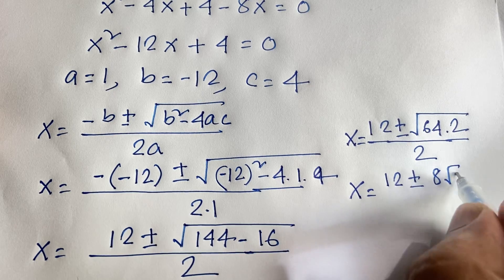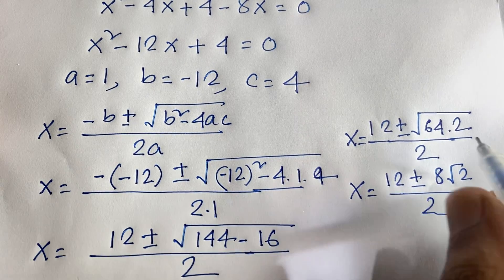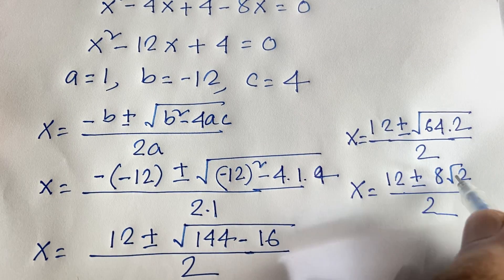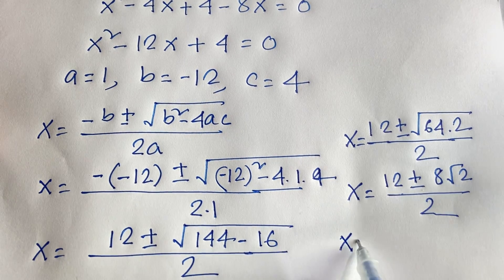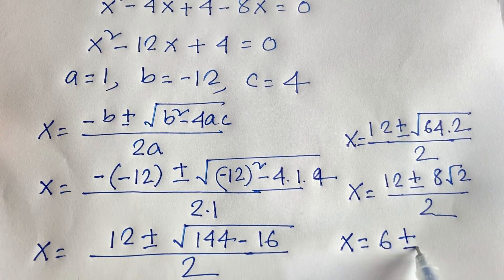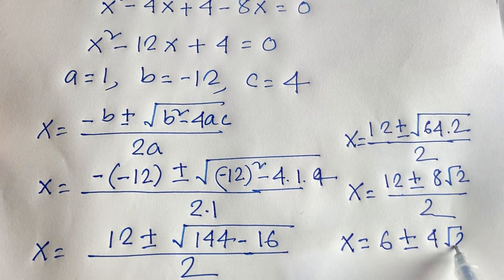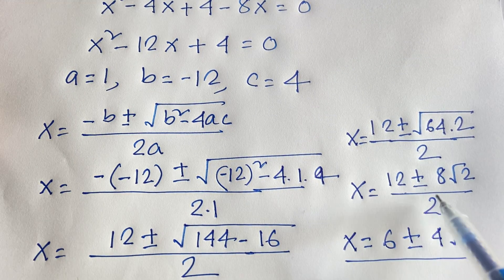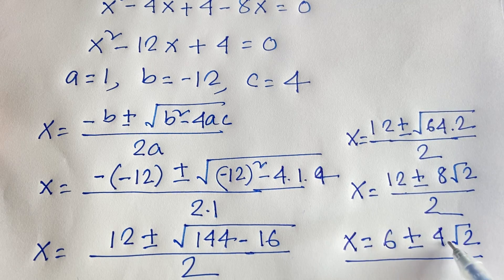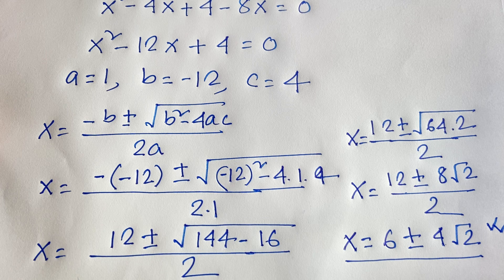So x equals 12 plus or minus 8 square root 2, all over 2. Dividing both terms by 2, we get x equals 6 plus or minus 4 square root 2. This is our final answer for this Math Olympiad question. Thank you all — if you enjoyed this video please subscribe to my channel. Goodbye, take care!